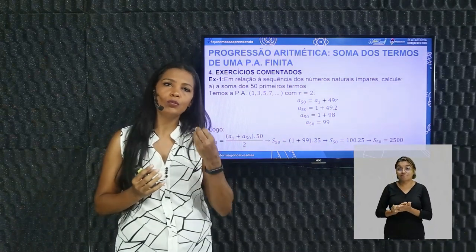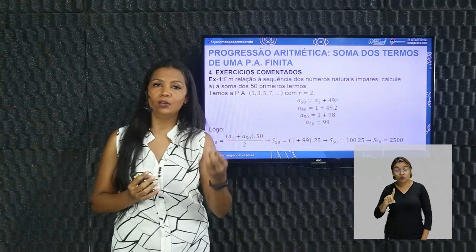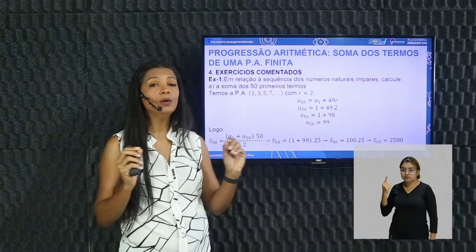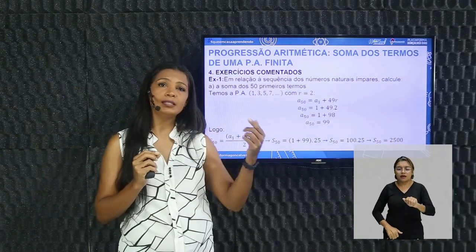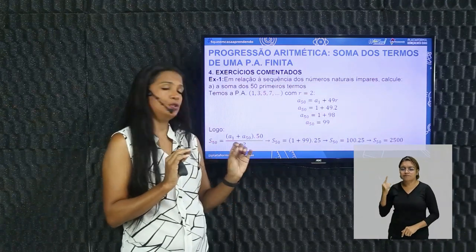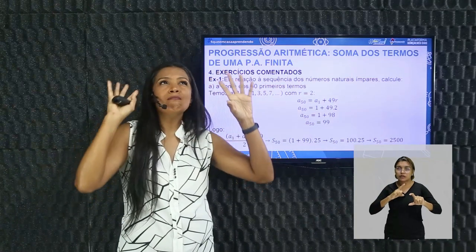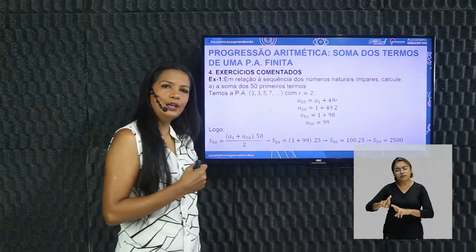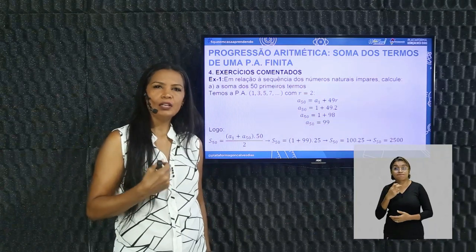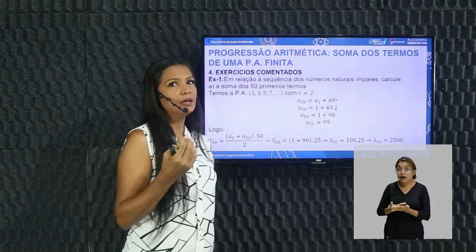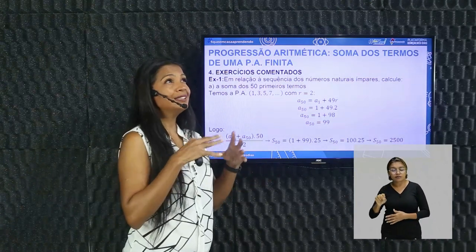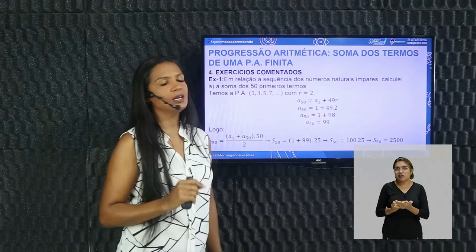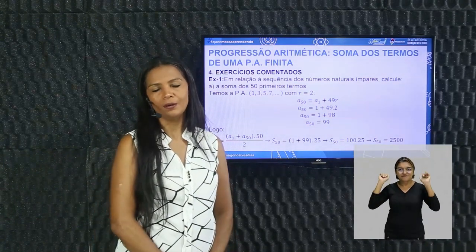Essas duas fórmulas vão ajudar demais na resolução de qualquer exercício: termo geral — AN = A1 + (N-1)·R — e soma dos termos — SN = (A1 + AN) × N ÷ 2. Espero que você tenha compreendido. Está com dúvida? Vai lá, assiste mais uma vez essa aula. Essa aula foi bem legal, com a história do fantástico matemático Gauss e sua enorme contribuição para o cálculo da soma dos termos. Um beijão para vocês e até a próxima aula!